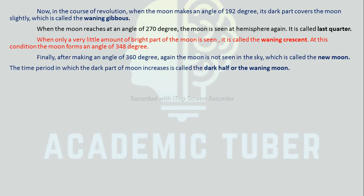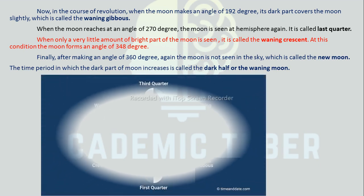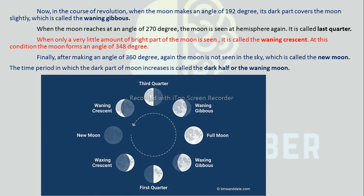In the course of revolution, when the Moon makes an angle of 192 degrees, its dark part begins to cover the Moon slightly — this is called Waning Gibbous. When the Moon reaches an angle of 270 degrees, the Moon is seen as a hemisphere again — this is called the Last Quarter. When only a very small bright part of the Moon is visible, it is called the Waning Crescent, at which the Moon forms an angle of 348 degrees. Finally, after making an angle of 360 degrees, the Moon is not seen in the sky again — this is called the New Moon. The time period in which the dark part of the Moon increases is called the dark half or Waning Moon. Here is a diagram showing the different phases of the Moon: New Moon, Waning Crescent, Third Quarter, Waning Gibbous, Full Moon, Waxing Gibbous, First Quarter, Waxing Crescent, and so on.